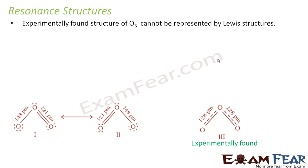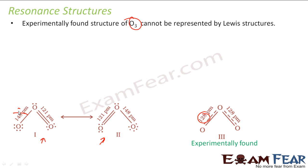The next topic is resonance structure. Experimentally it is found that O3 cannot be represented by a Lewis structure because it shows resonance. If you try to draw the O3 molecule, we get two possible structures. The oxygen-oxygen single bond was 148 pm, and the double bond size reduces to 121 pm. But experimentally, the O3 molecule has a bond length of 128 pm — neither 148 nor 121. So experimentally, in cases where multiple Lewis structures are possible, there is something called resonance, and it makes things more stable.